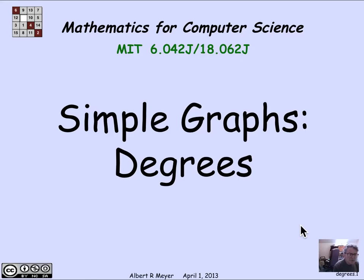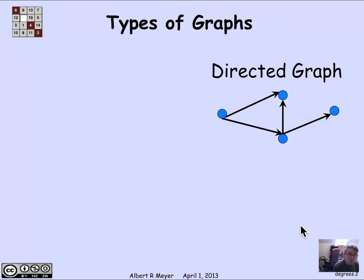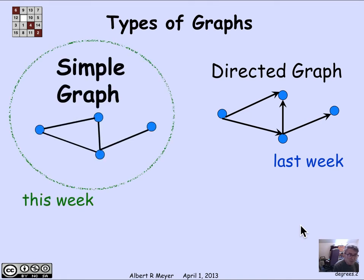So now we start on another topic in graph theory, namely the topic of simple graphs. Last week, we were talking about directed graphs where the arrows have a beginning and an end, as shown here. But simple graphs are simpler.